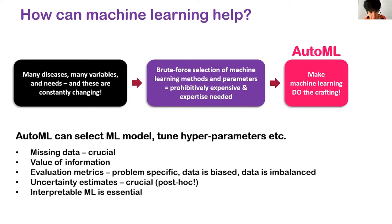Machine learning models can provide uncertainty estimates associated with predictions, so we know when we can trust the model and when we cannot. Uncertainty estimation is another topic to bring into the roundtable discussion, along with the interpretability of machine learning models.